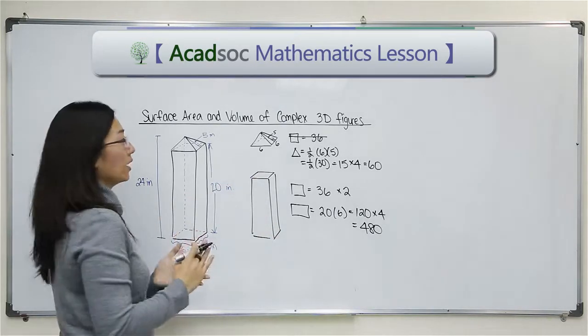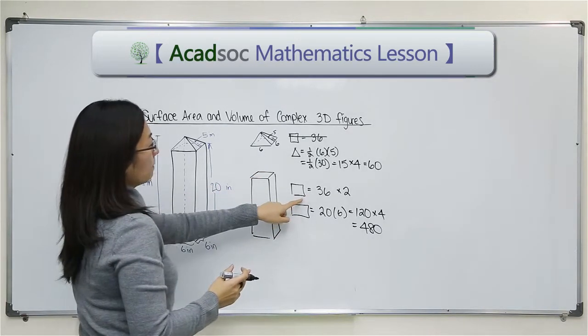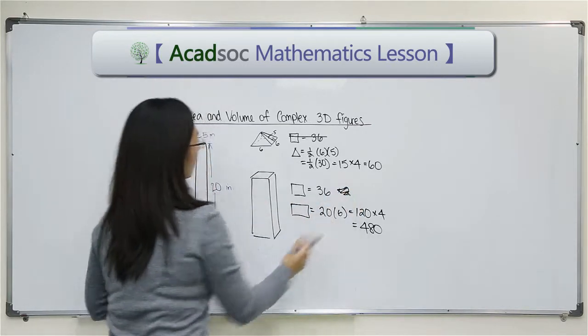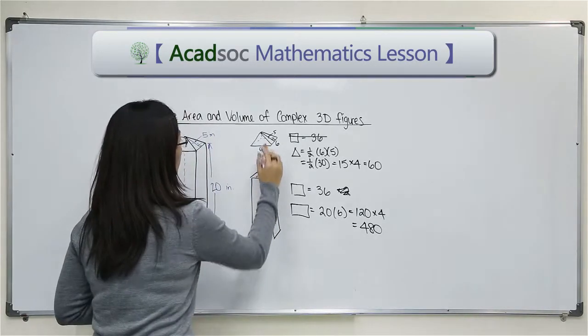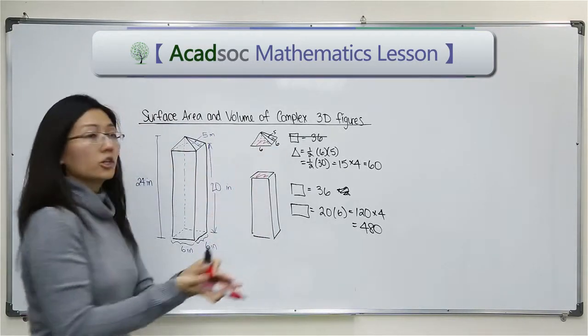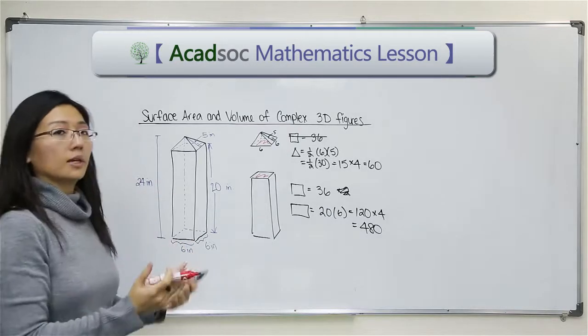I don't need to count that. And then for the bases of that prism, I only need to count one of them because again, this top and this top are touching each other and it's not part of the outside surface.